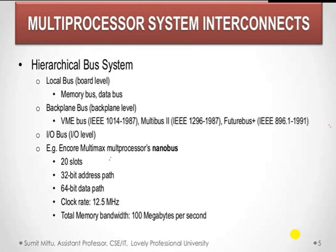As mentioned earlier, the three different types of multiprocessor system interconnects are: hierarchical bus systems, crossbar switch and multiport memory, and multi-stage and combining networks. Let's explain each of these system interconnects in detail.